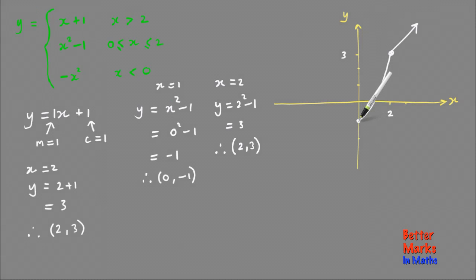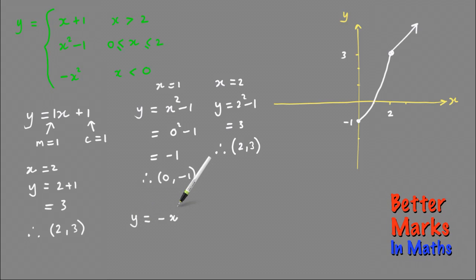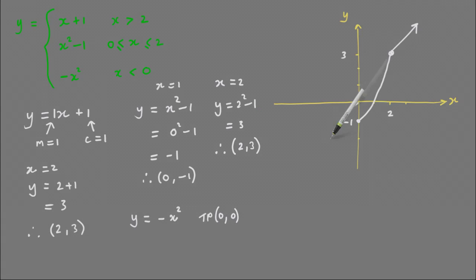Then the last part to sketch is y equals minus x squared. Y equals minus x squared is an upside-down basic parabola with a turning point at 0, 0. It's upside down and something like that. It should be roughly the same kind of shape as that but upside down.